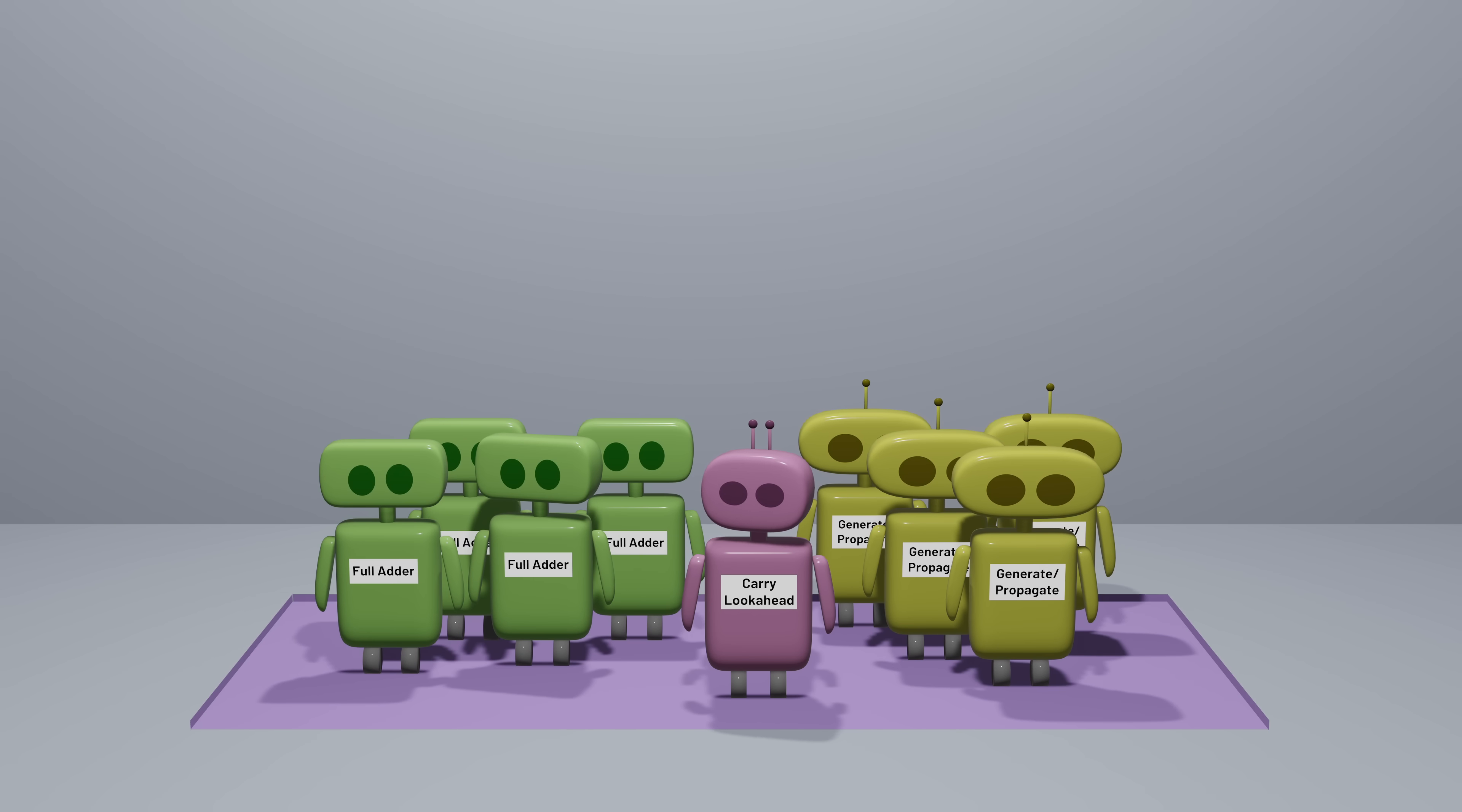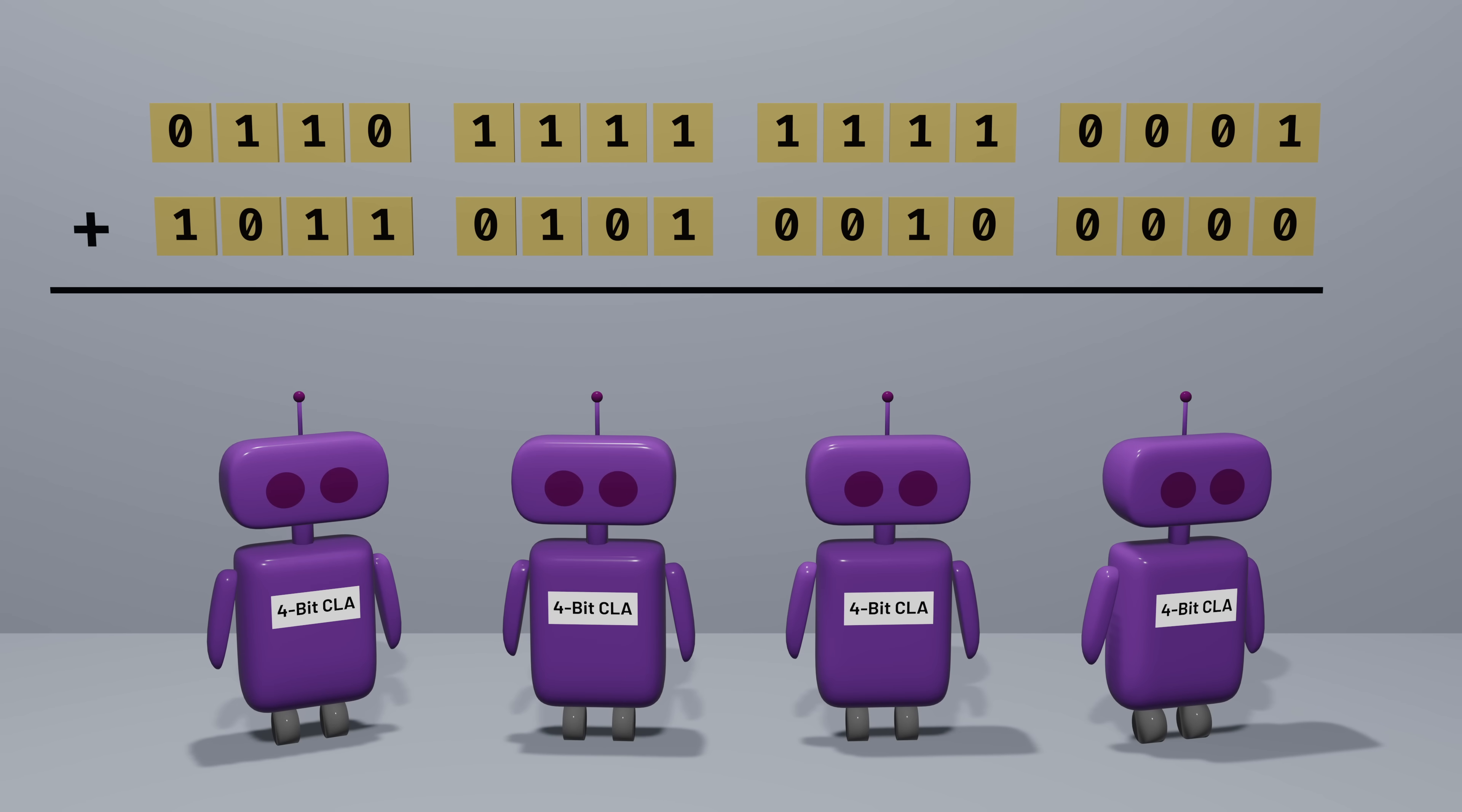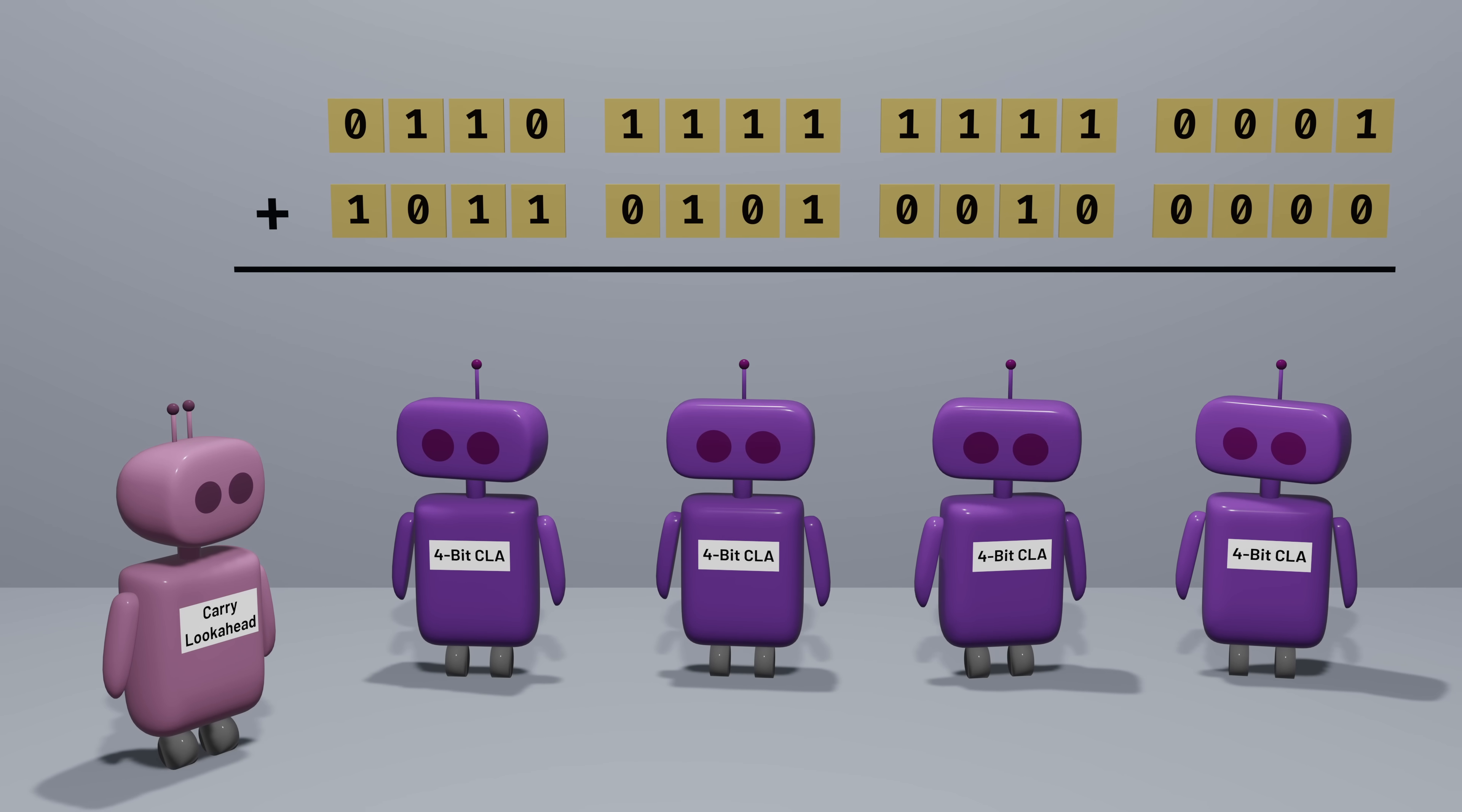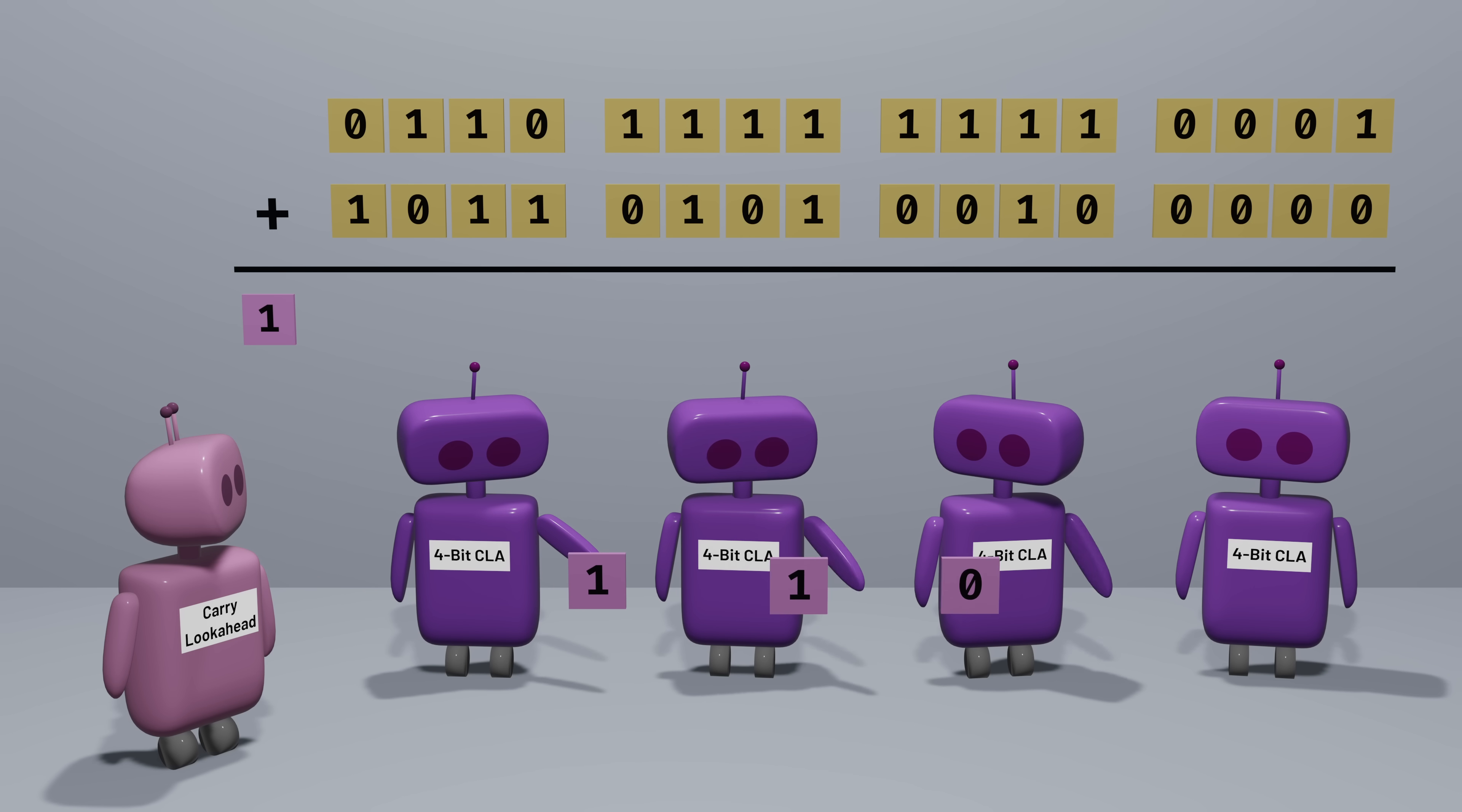Instead, what we'll often do is package together our logic for a 4-bit carry lookahead adder and chain them together to make a larger adder. We could then let each 4-bit adder run one at a time, passing carries on to the next one. But of course, now we know a more efficient way to do this. We can use carry lookahead logic again, just on a bigger scale. Each 4-bit group can now calculate a generate and propagate value for its group, and a larger carry lookahead unit can use that information to compute the carries for each 4-bit adder so that they can do their work in parallel without waiting for each other.